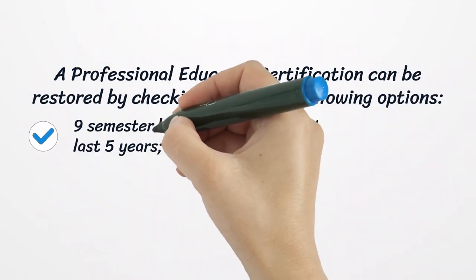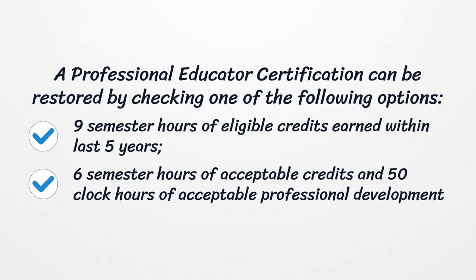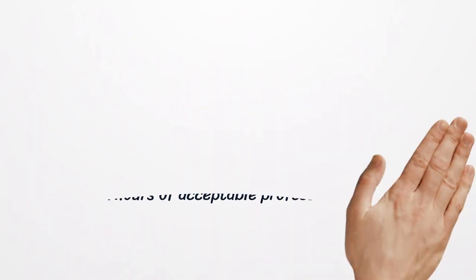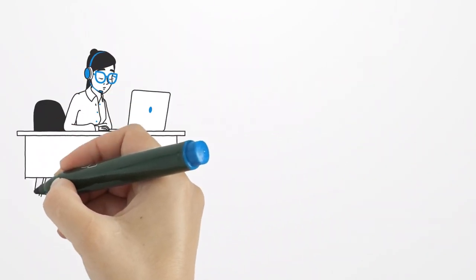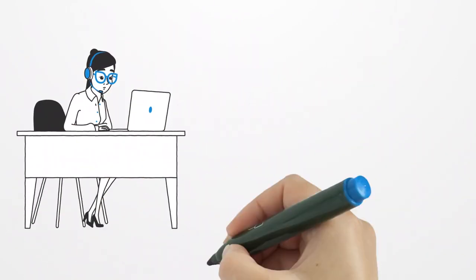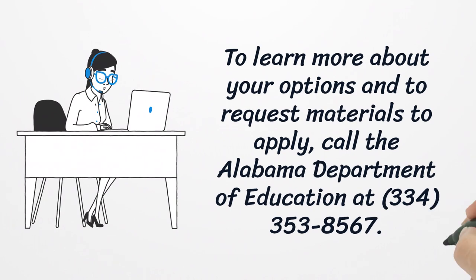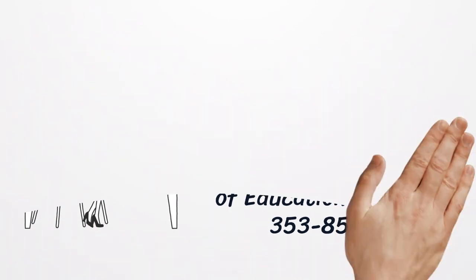A professional educator certification can be restored by checking one of the following options: 9 semester hours of eligible credits earned within the last 5 years; 6 semester hours of acceptable credits and 50 clock hours of acceptable professional development earned over the last 5 years. To learn more about your options and to request materials to apply, call the Alabama Department of Education at 353-8567.